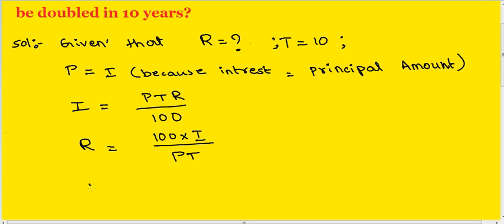From this, R equals, substitute the above values in the formula: 100 × I, P = I, so I into T = 10.